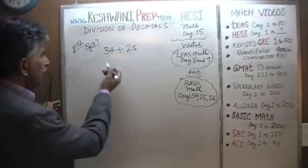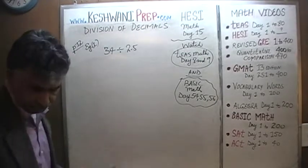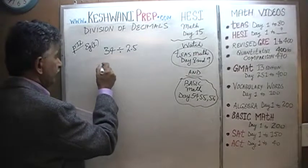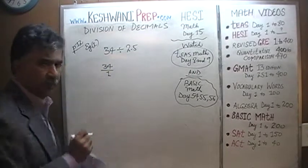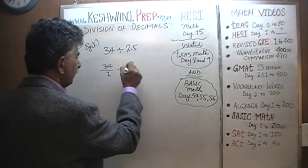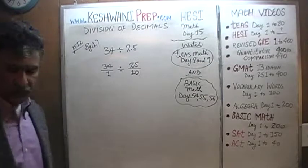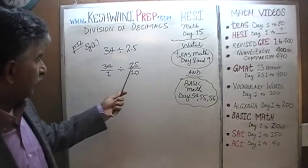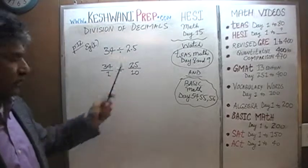For example 1, we have 34 divided by 2.5. Now 34 is very straightforward — 34 can be written as 34 over 1. And 2.5 can be written as 25 over 10. If you were to divide 25 by 10, you would get 2.5. So 25 over 10 is the exact same quantity as 2.5.